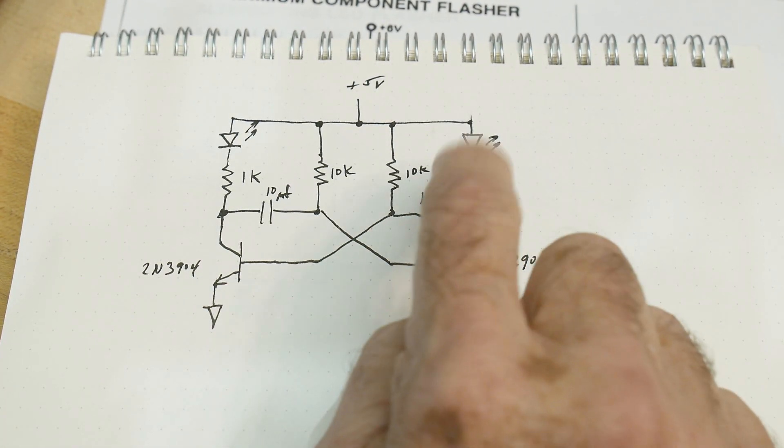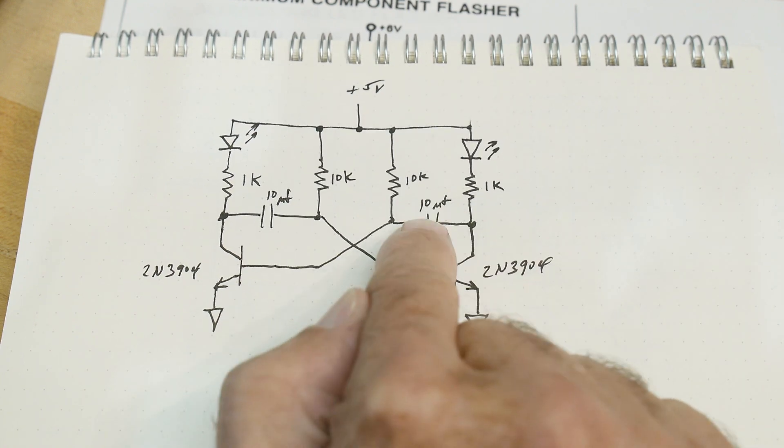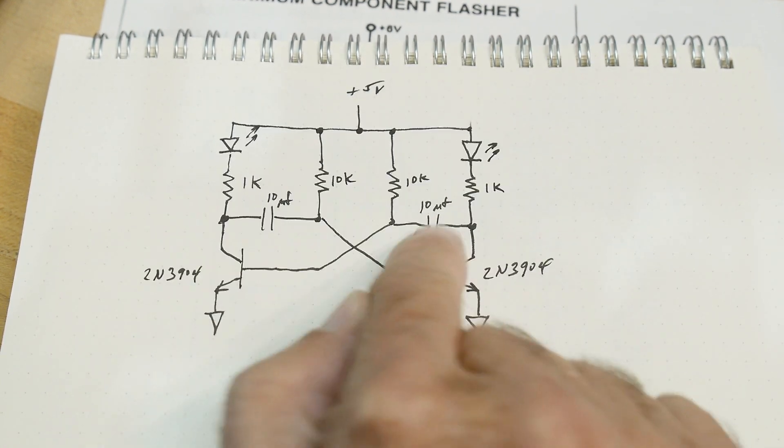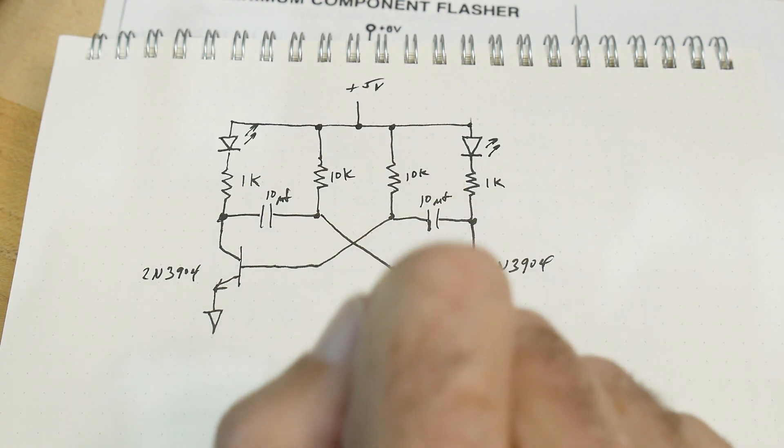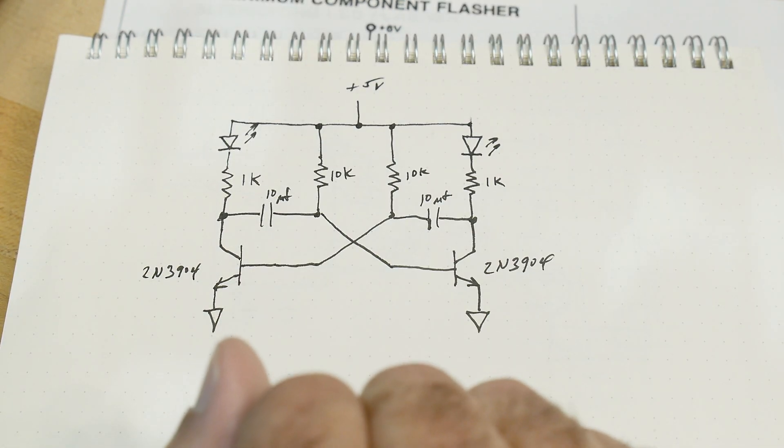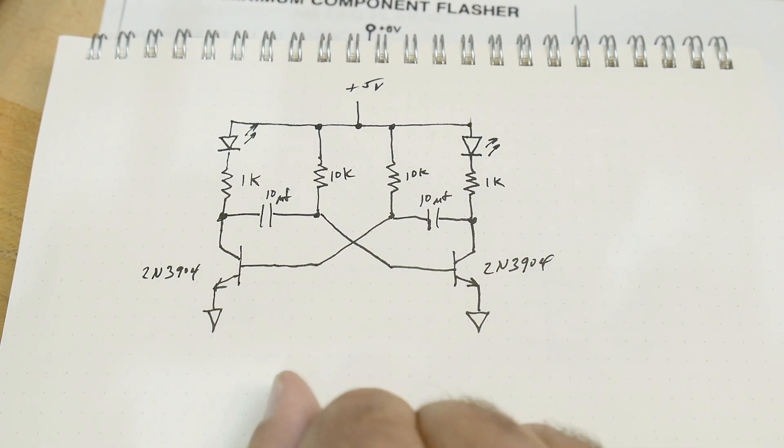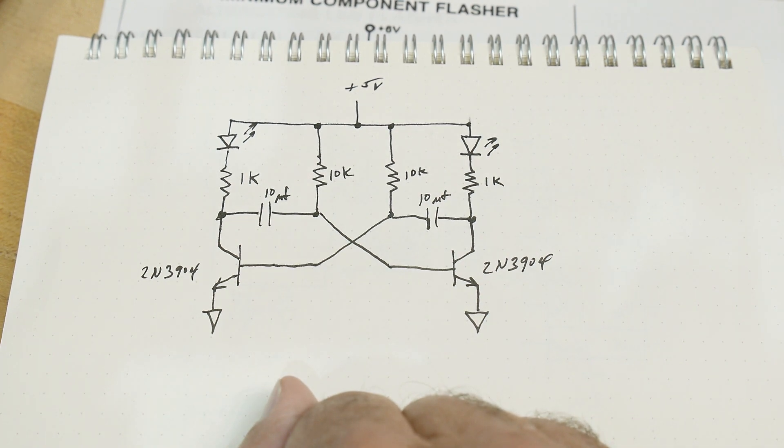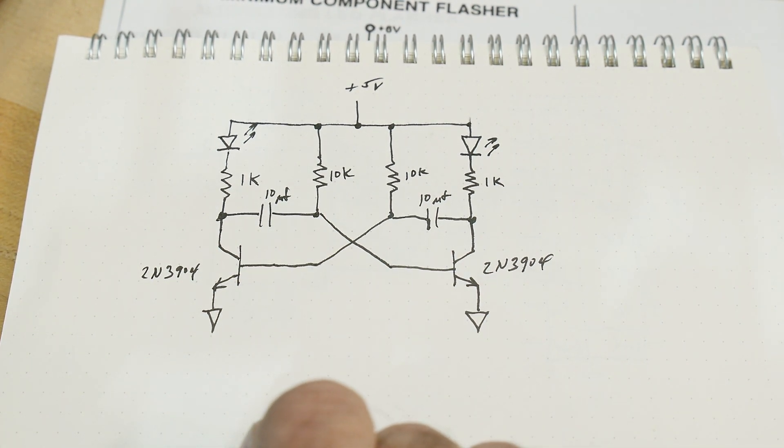I've changed a couple values. I've got some 1kΩ here, I've got 10 microfarad capacitors and 10kΩ resistors, just because I have them off the shelf. So those are all the parts I'm going to use and it's a fun little circuit.